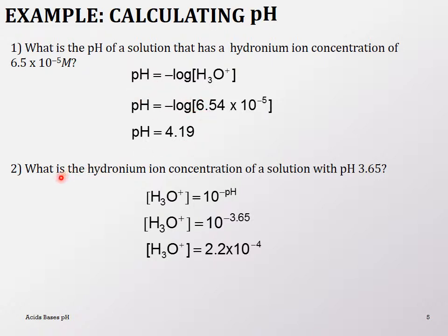What is the hydronium ion concentration of a solution with pH 3.65? In this case you take the antilog on your calculator. The answer should be 2.2×10⁻⁴. Since the pH is around 3.65, you should expect 10⁻⁴ or 10⁻³ range for the power of 10.